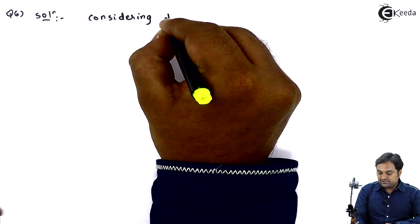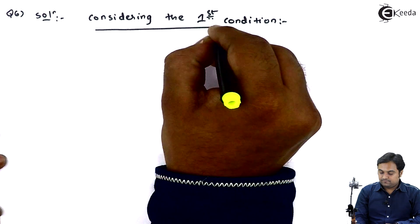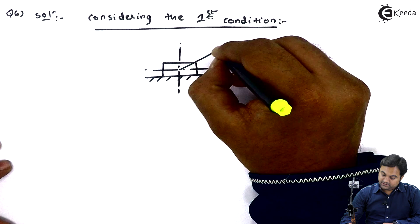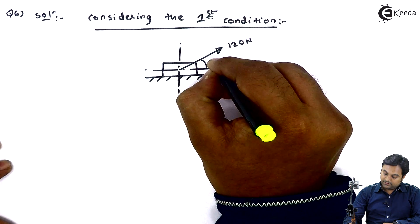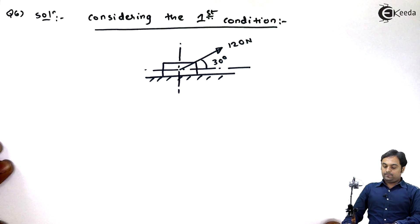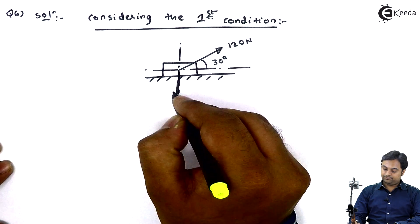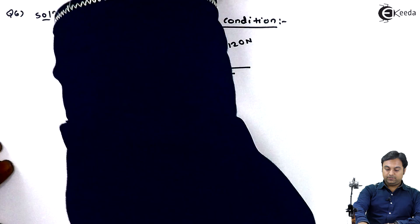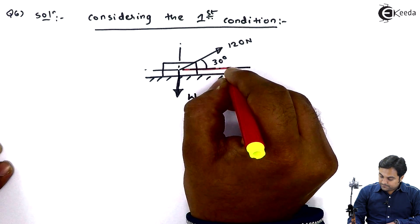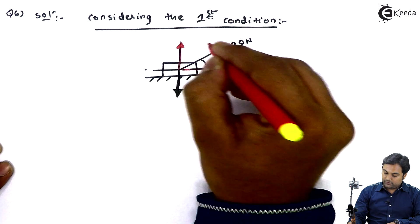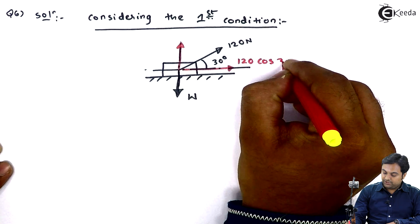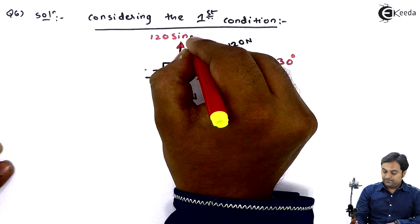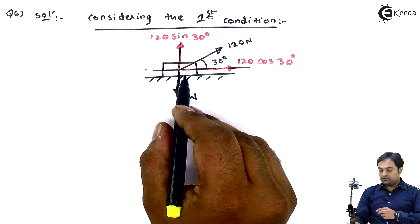Considering the first condition: a pull type of force of 120 Newton is applied inclined at 30 degrees to horizontal. We also have the weight W acting downward. Since 120 Newton is inclined at 30 degrees to horizontal, its horizontal component is 120 cos 30 and its vertical component is 120 sin 30.